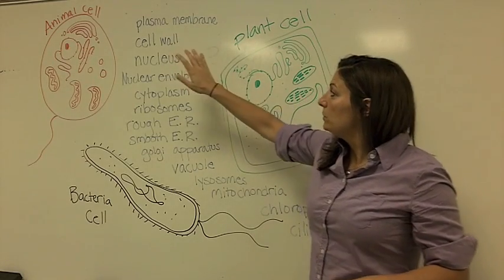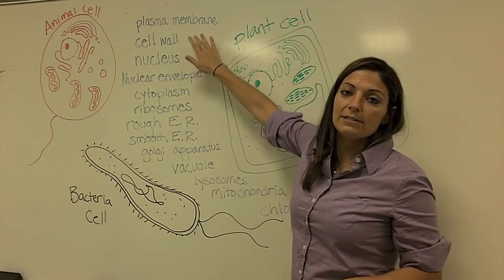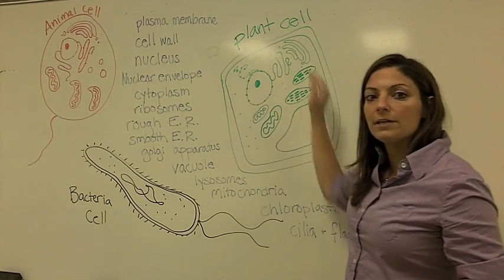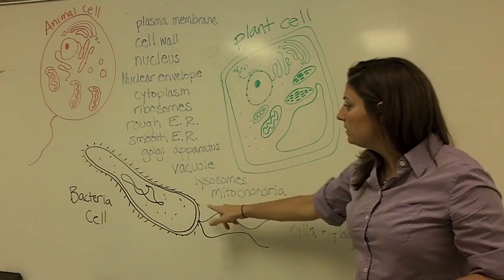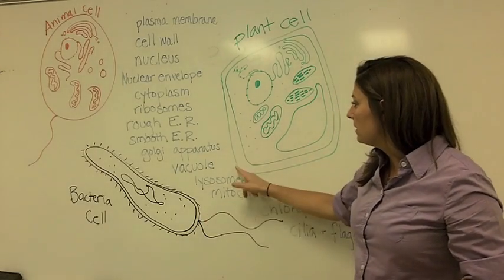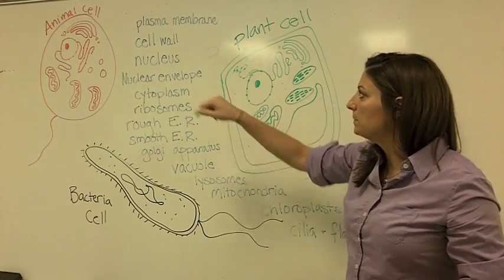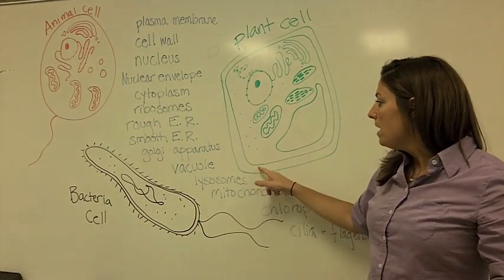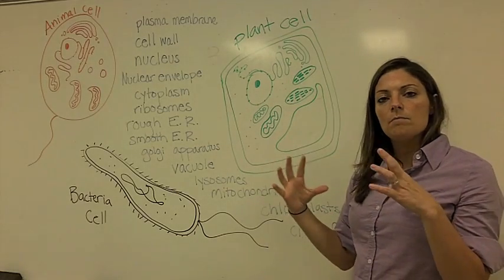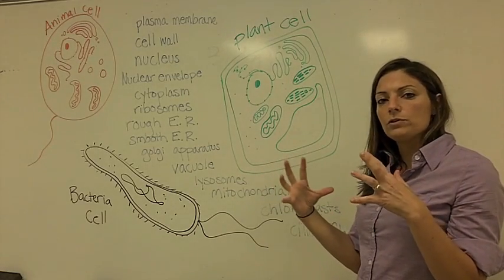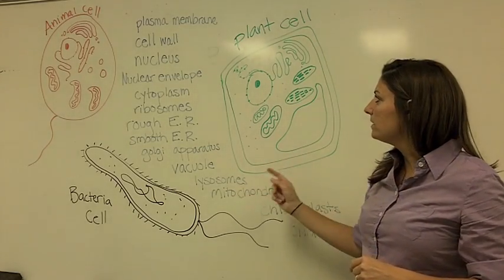Now two of these kinds of cells also have a cell wall outside that plasma membrane. Plant cells and bacteria cells have a cell wall outside — animal cells don't. That's a little bit more rigid, more structure for those cells.